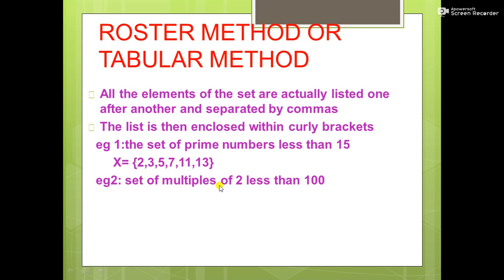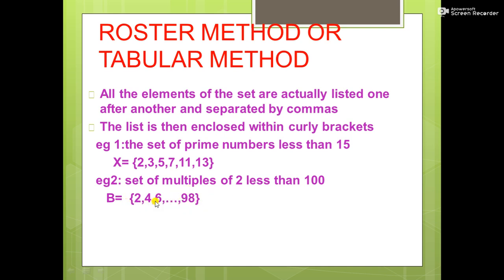Second example: the set of multiples of 2 less than 100. Since it is a large set, we write B = {2, 4, 6, ..., 98}. The three dots mean the numbers are continuing, and the last number 98 is clearly written. This is the shortest way to represent a large set using the tabular method.